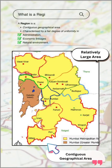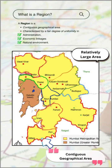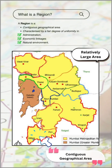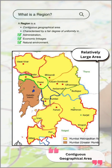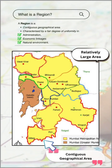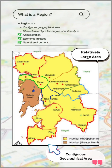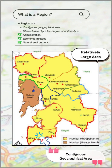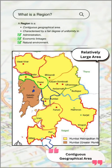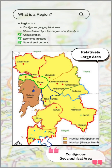Before starting with RP, we should first understand what is a region. A region is a contiguous geographical area that shares common characteristics in administration, economic linkages, or natural environment. In the image, you can clearly see a region marked by its boundaries.